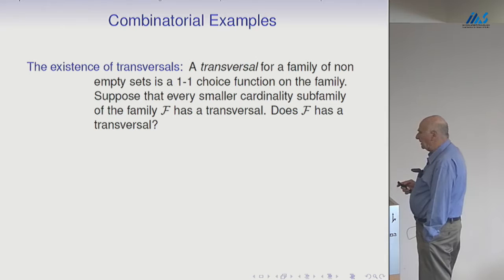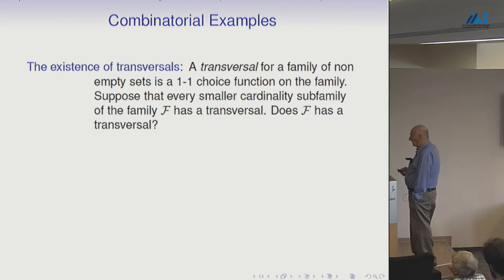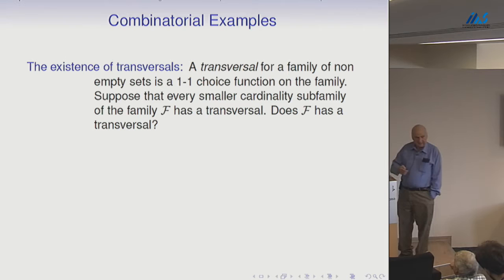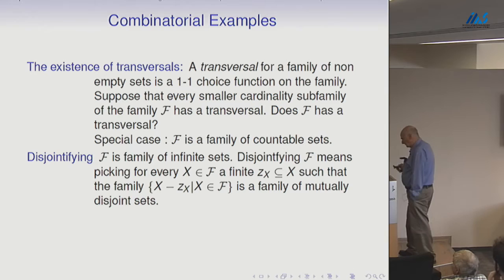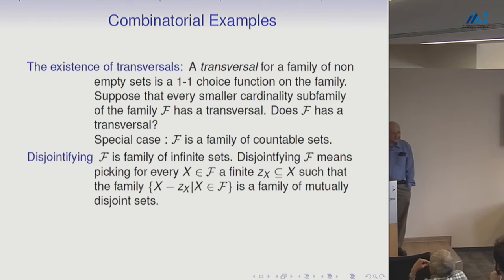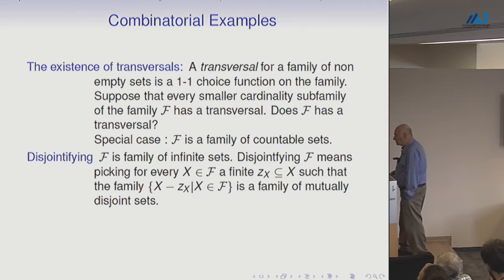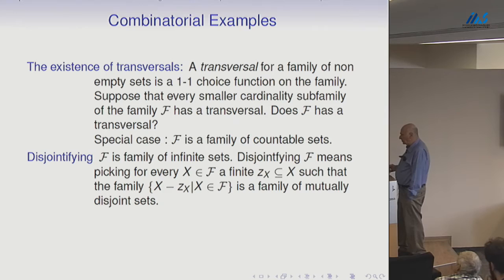A transversal picks a member from every member of the family. Suppose that every smaller cardinality subfamily of F has a transversal — does that mean that F itself has a transversal? Usually you'll have to have some restriction on the family F; otherwise it's relatively easy to get counterexamples. For being more concrete, let's think about F as a family of countable sets. There are good reasons why this particular case is especially interesting.